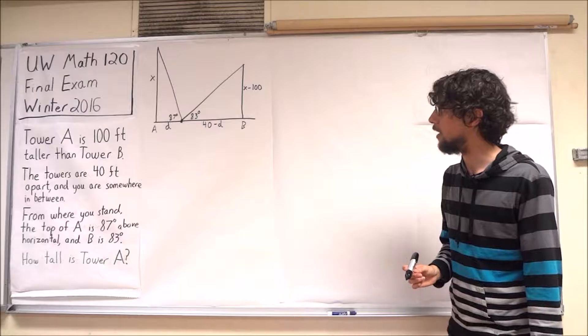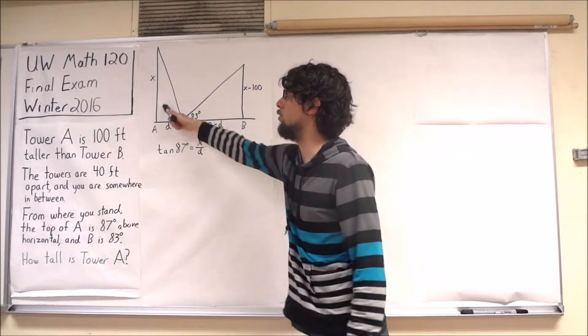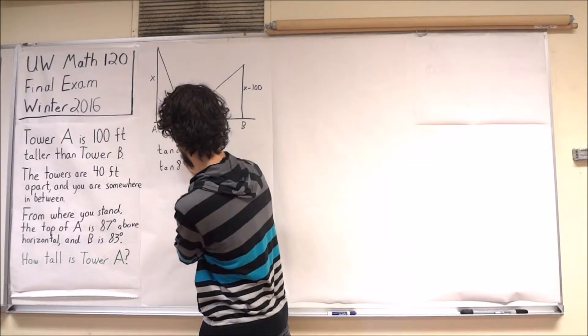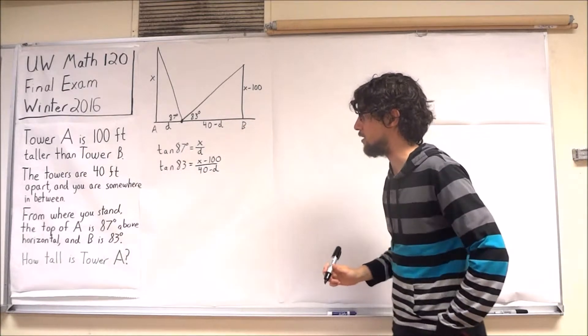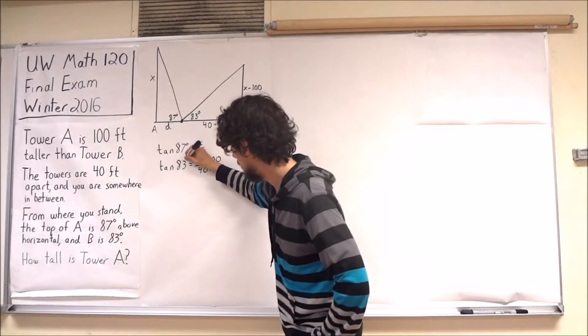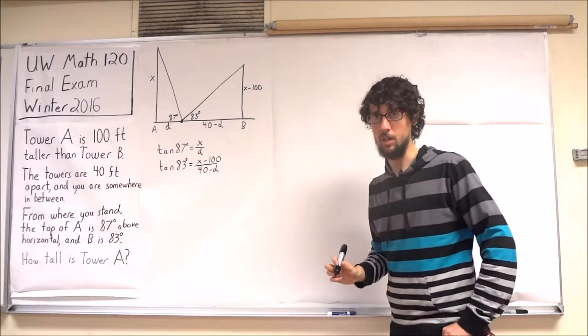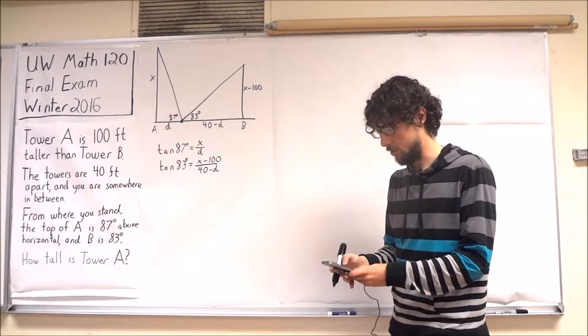So let's go ahead and do this. Our first triangle over here gives us that tangent of 87 is equal to x over D. And our second triangle gives us that tangent of 83 is equal to x minus 100 over 40 minus D. So let me grab a calculator to compute these values of tangent.